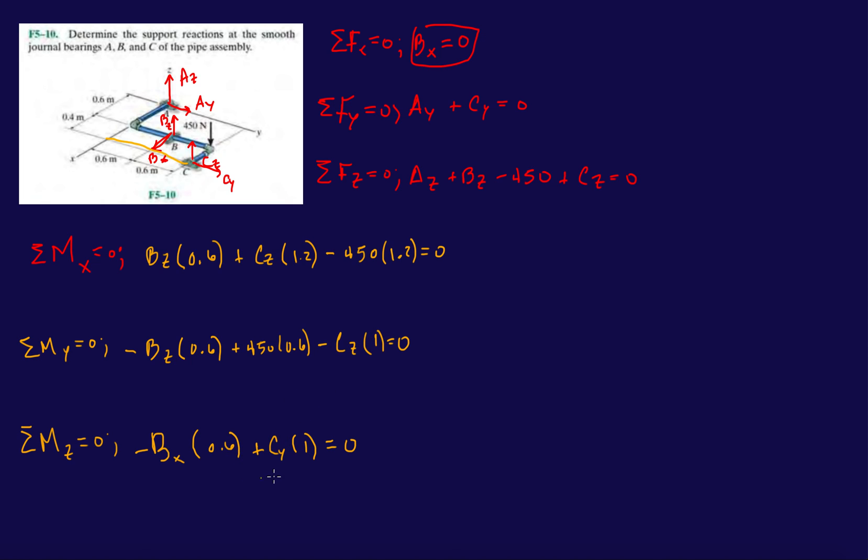Now let's look at this. B_x from the very first equation we did was 0. This is 0. That means C_y is also 0. Which then means A_y is 0. So then we're just going to have to focus on these.